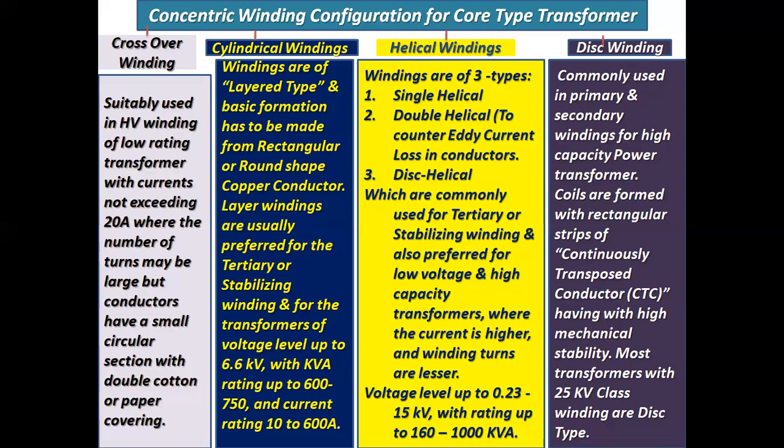Disc winding is commonly used in primary and secondary windings for high capacity power transformers. Coils are formed with rectangular strips of continuously transposed conductors, that is CTC cables, having high mechanical stability. Most transformers with 25 kV class winding are disc type winding.